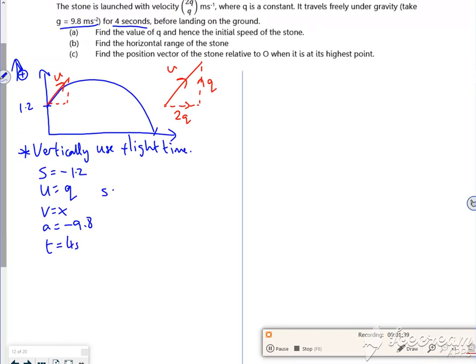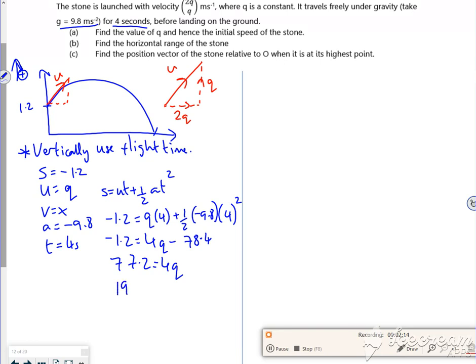So s equals ut plus a half at squared, so minus 1.2 is q lots of 4, plus a half minus 9.8, 4 squared. So minus 1.2 is 4q minus 78.4. If I add on the 78.4, I've got 77.2 is 4 lots of q. Divide by 4, gives me 19.3 as a value of q.